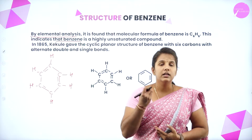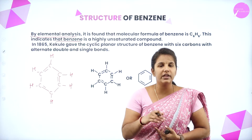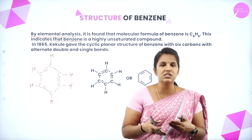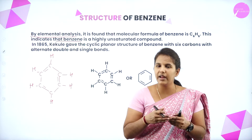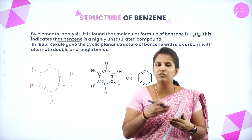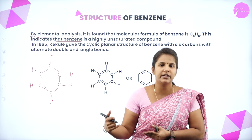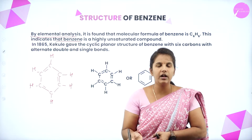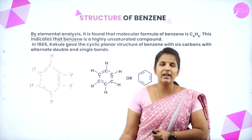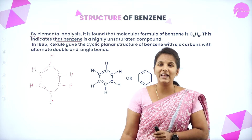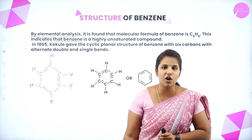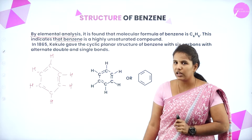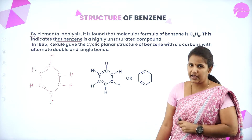To balance the valency of carbon, we write double bonds. The carbon valency is four, but with only one hydrogen atom outside and two bonds with adjacent carbon atoms, this shows high unsaturation — just as we learned in alkenes and alkynes. Writing double bonds to balance carbon valency indicates a high degree of unsaturation in the benzene ring with molecular formula C6H6.